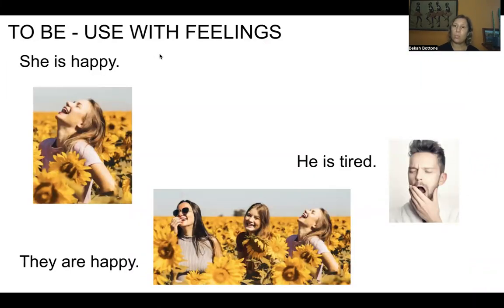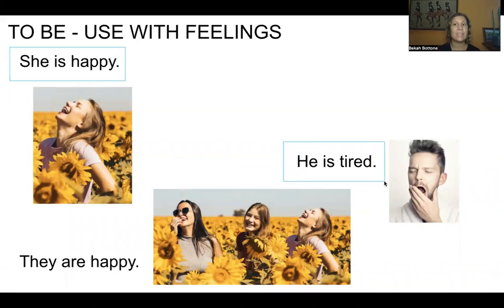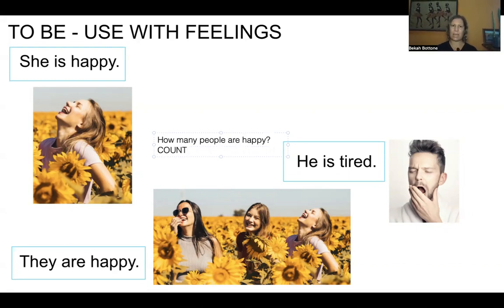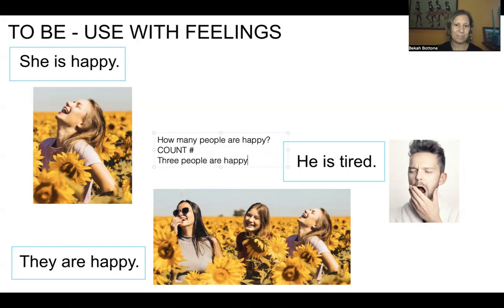So we can use to be with feelings. Repeat after me. She is happy. He is tired. They are happy. How many people are happy? When I ask how many, I want you to count — I want a number. Three people are happy. There are three people in the picture.